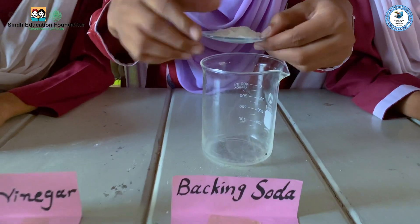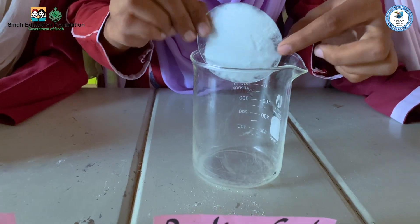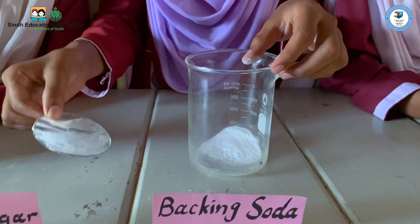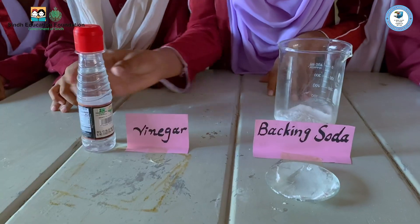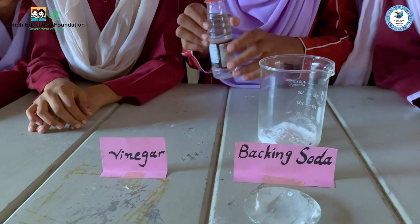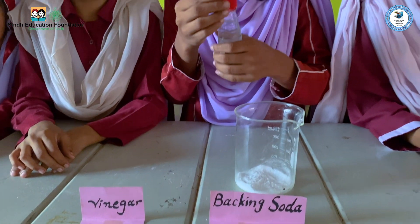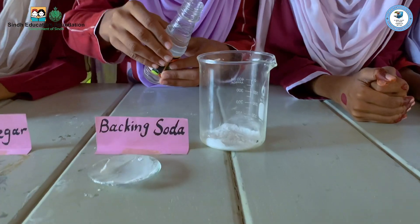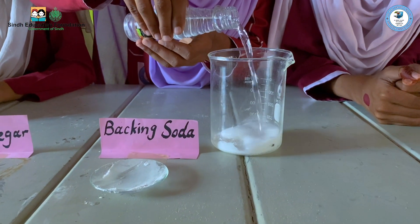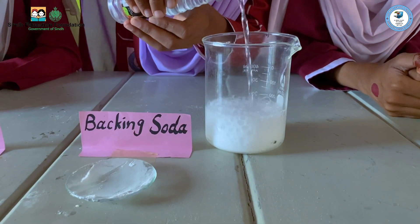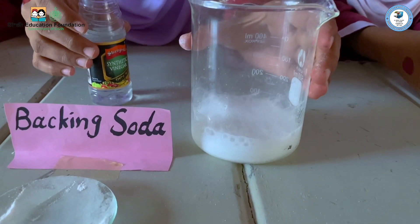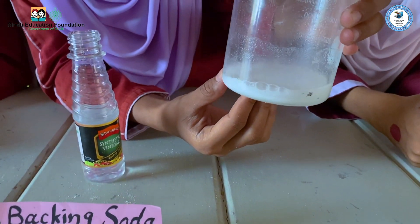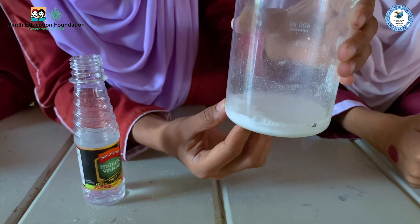We will add all this in the beaker. Now we will add vinegar into the beaker. Now, let's see — we have bubbles here. Carbon dioxide is created.